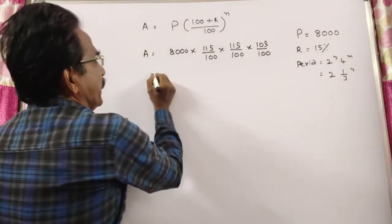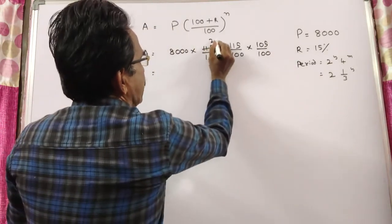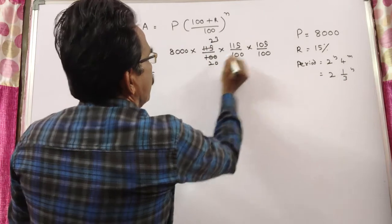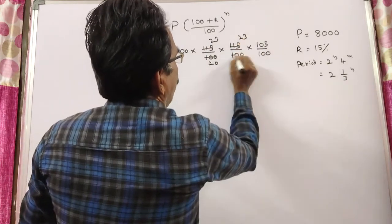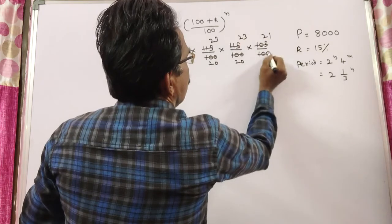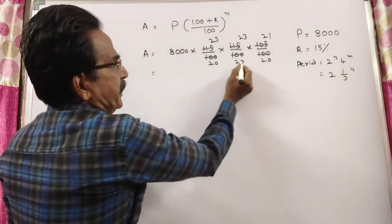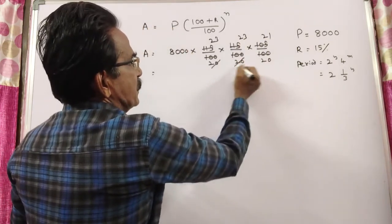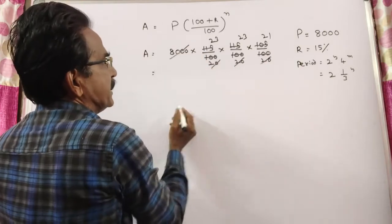Now let us cancel 523s, 520s, 523s, 520s, 521s, 520s. So, 20 into 20 into 20, this is equal to 8000, 8000 gets cancelled.